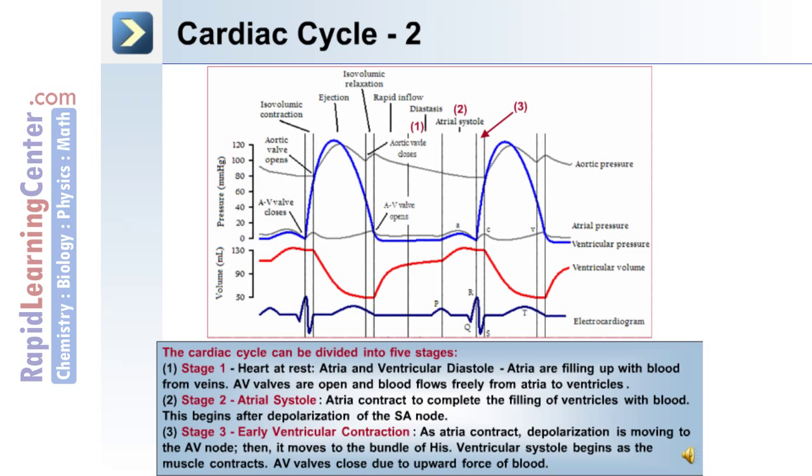Stage 2: Atrial systole. The atria contract to complete the filling of the ventricles with blood. This begins after depolarization of the sinoatrial or SA node.